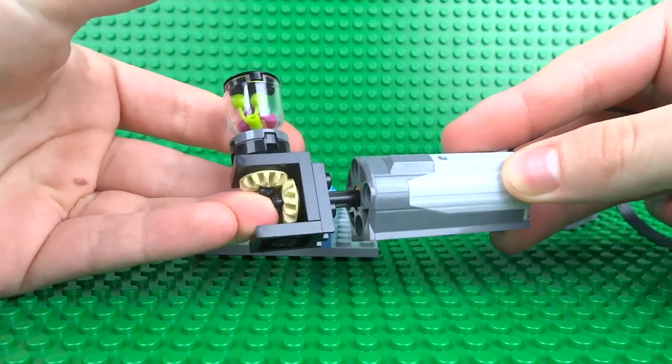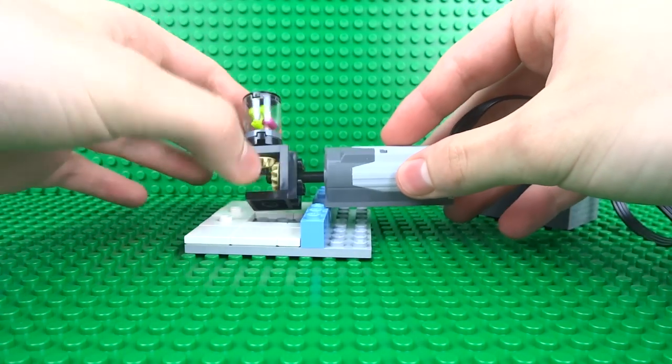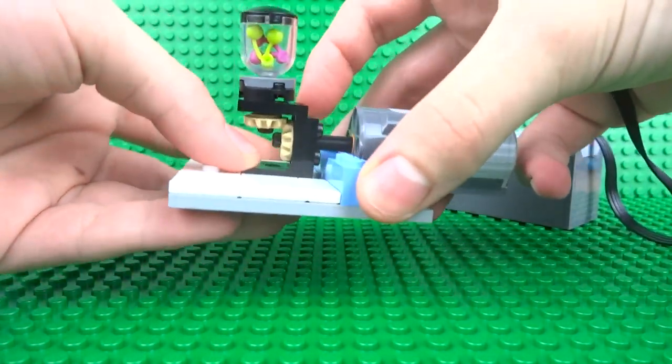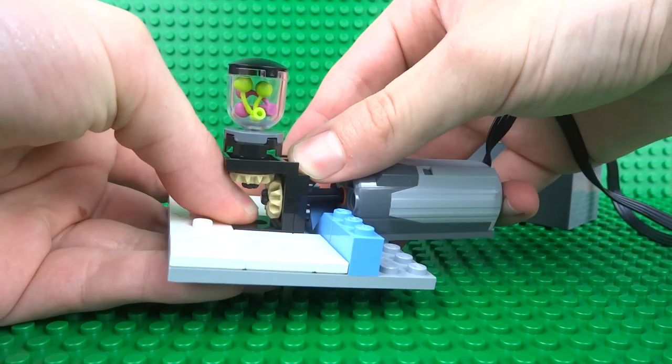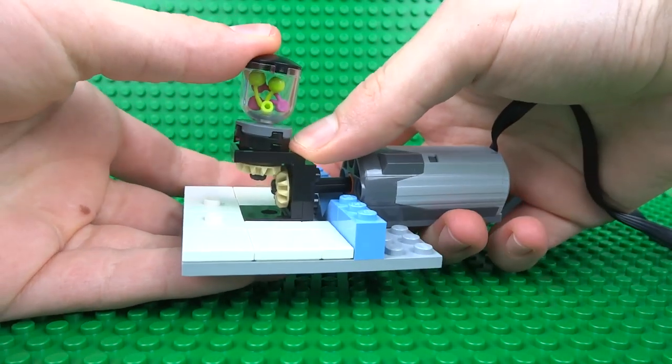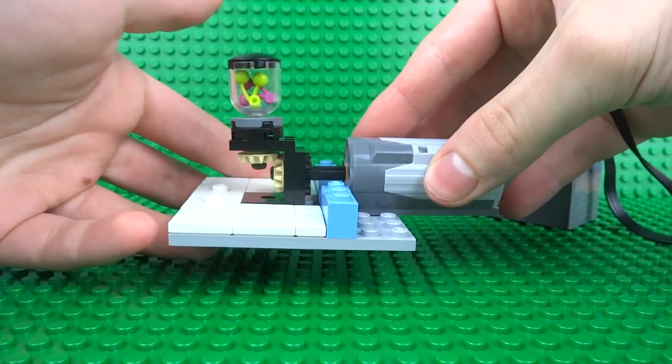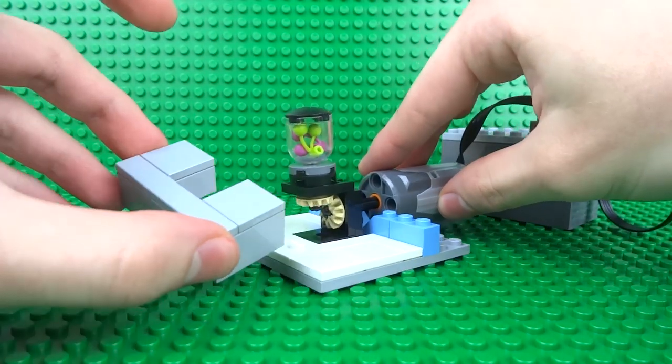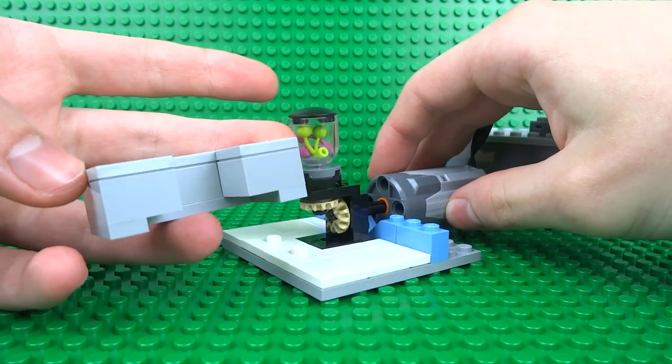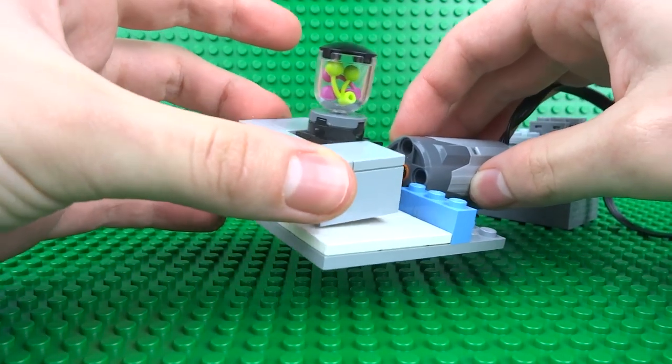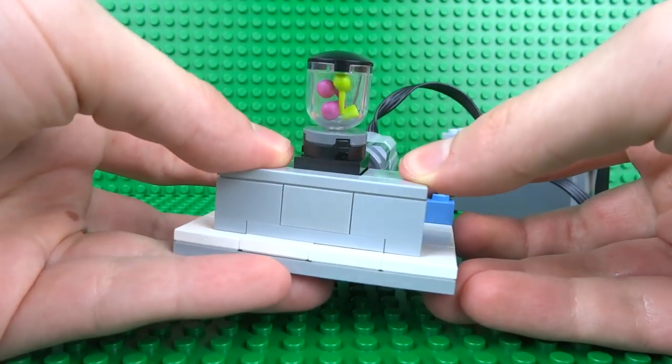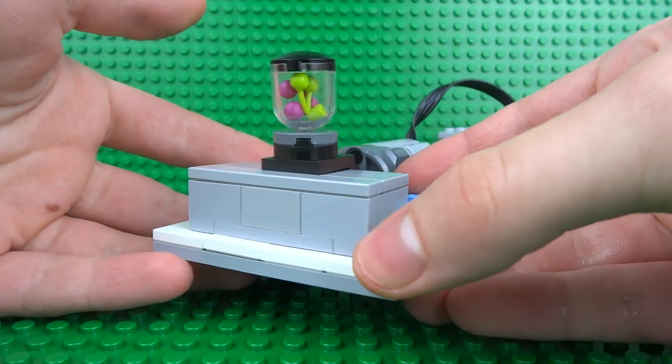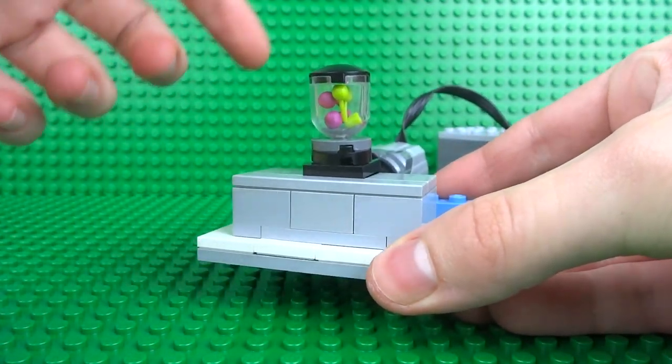For example, we can first attach the blender to the motor and as it is, it's already the correct height. So all that's left to do is to build it into your Lego buildings and creations. You can see the blender is looking a little bit weird at the moment, so we can fix that by building a table around it. This is just made out of some simple bricks and plates.